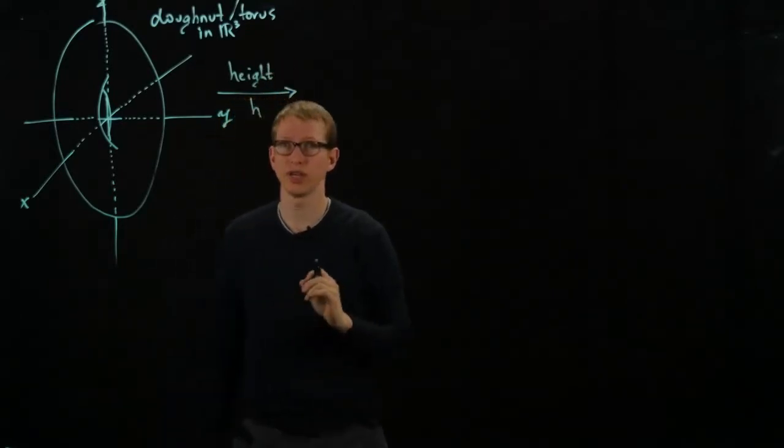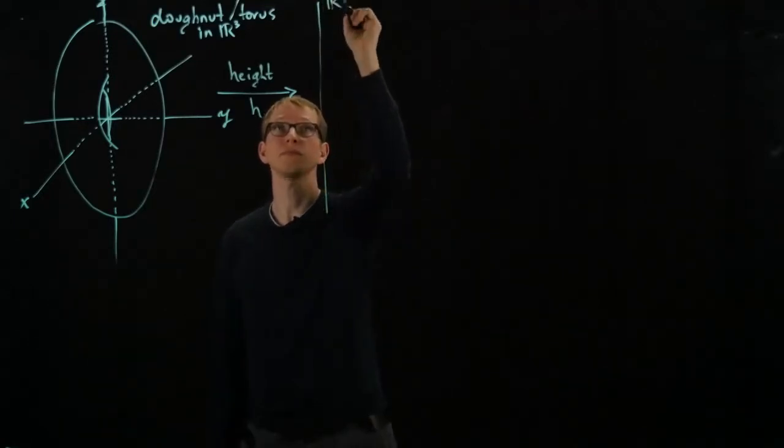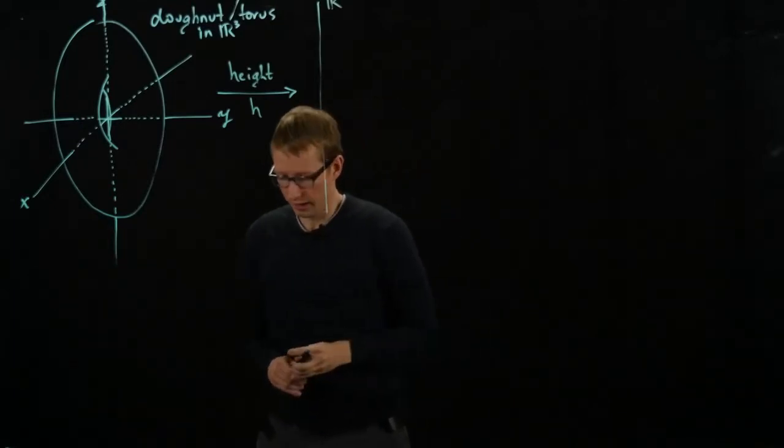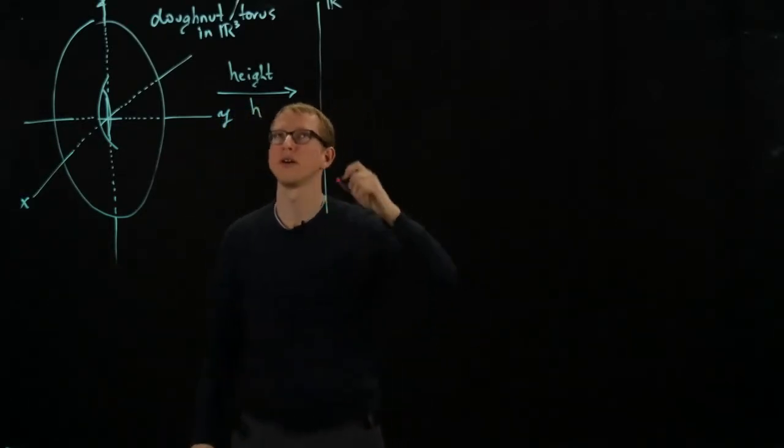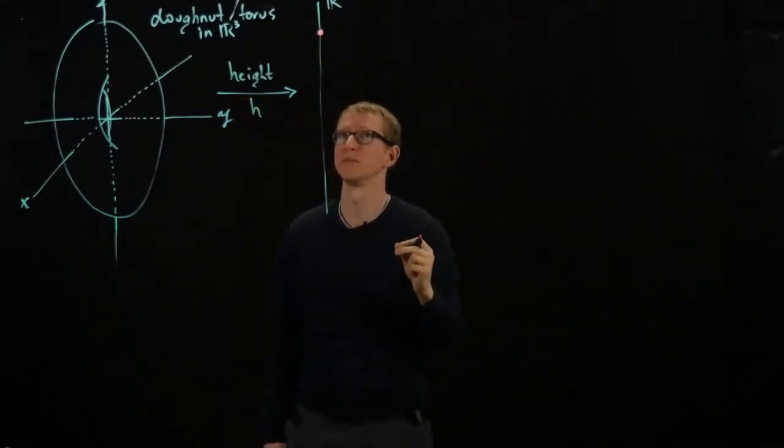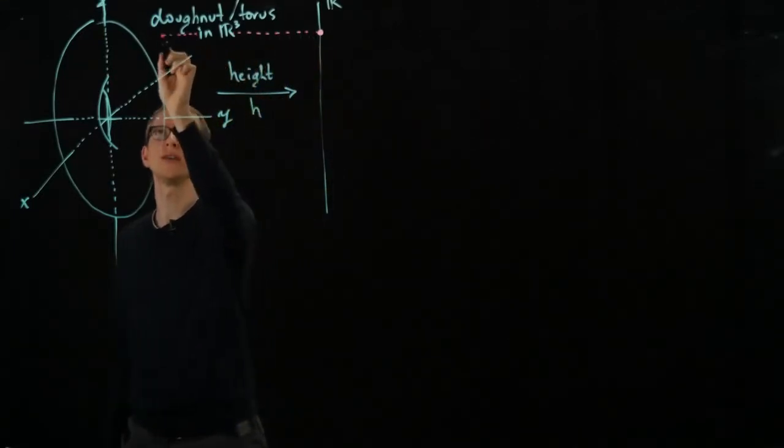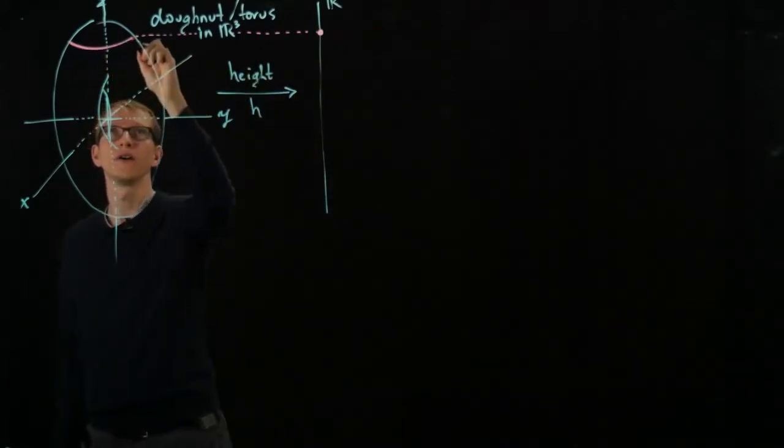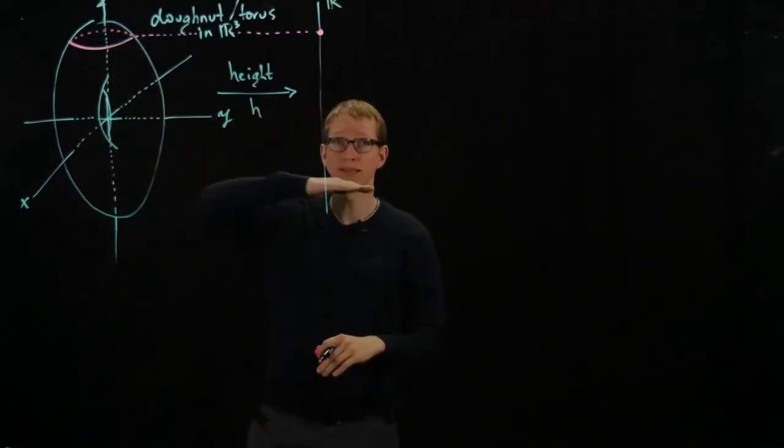So we project from this subset. Let's call this function h. We just project from this subset to the real line. And it just reads us the height of the point that we're looking at. And let's focus a little bit on looking at images, looking at certain points in the image of this function. If we look at the inverse image, so we look at all the points that get mapped to a specific height, this traces out sort of a curve on this donut.